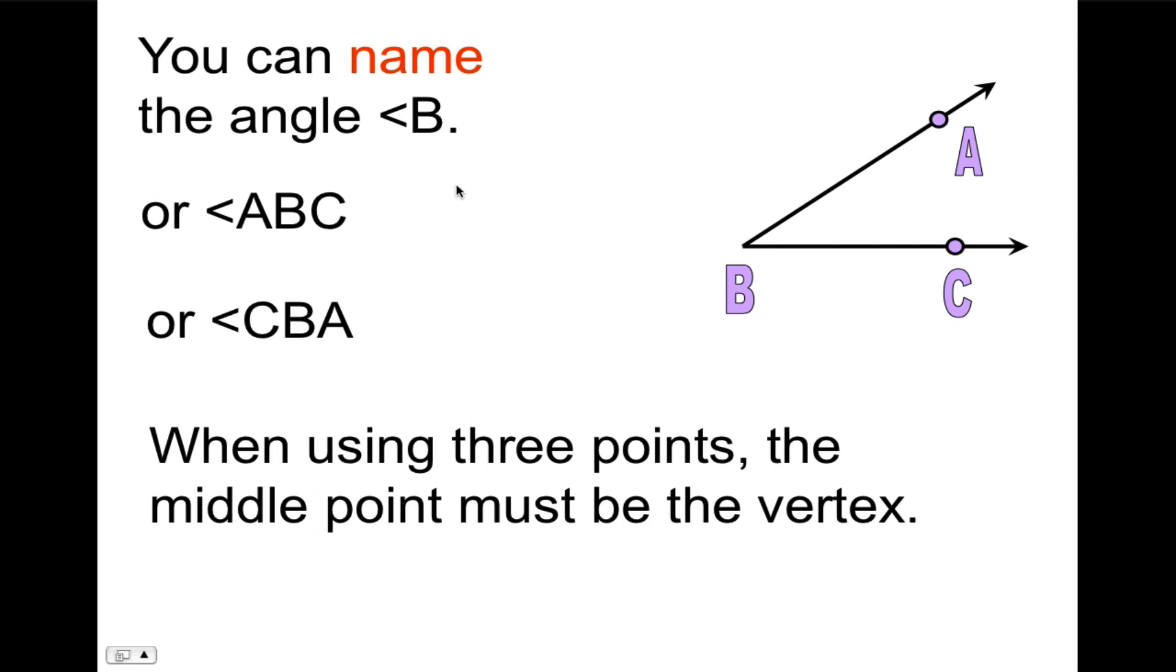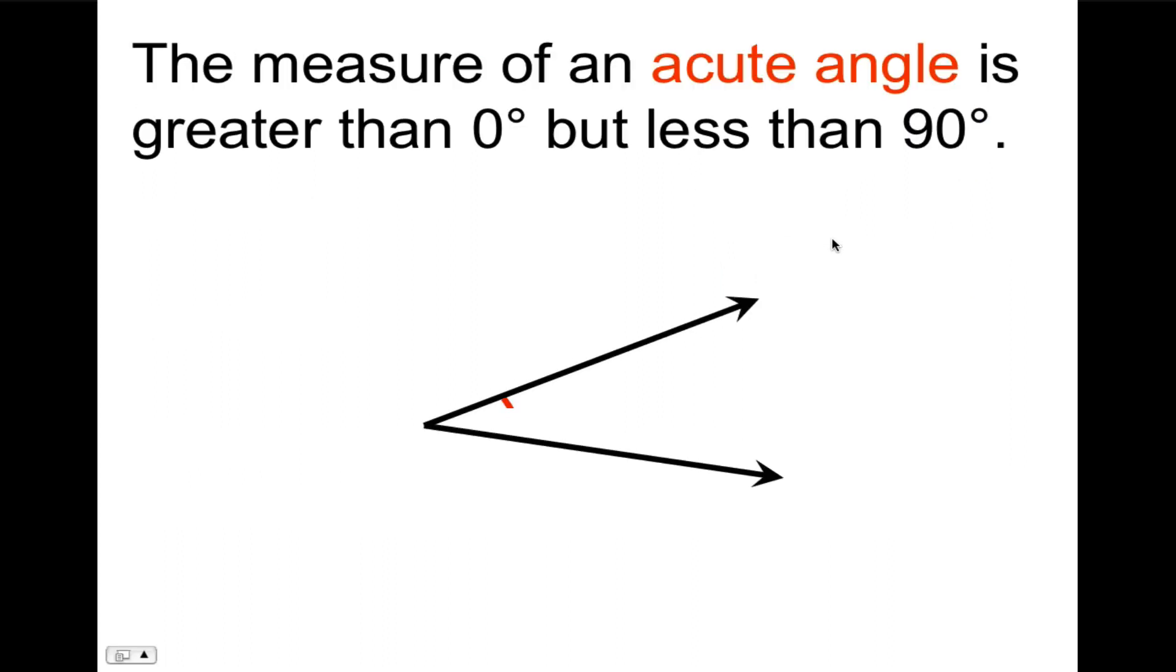And so is angle B is a good name for that angle. Why would we want to use three letters when it's much more complicated? Well, sometimes you may have several angles that emerge from the same vertex. Like this situation. Now, just saying angle B is ambiguous. Do you mean this angle B? Or do you mean this angle B? Or do you mean the whole thing? Or do you mean the other side? So by saying angle ABC, now I'm being very clear that I intend to say this angle.